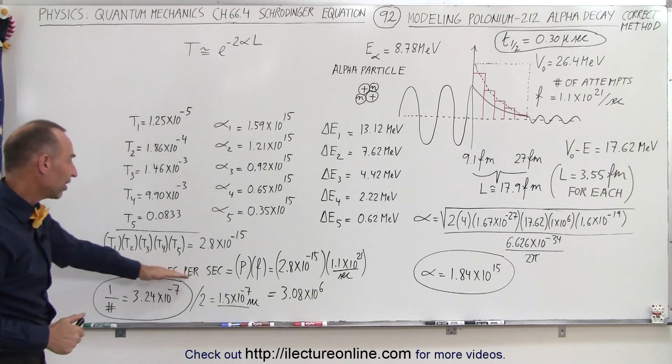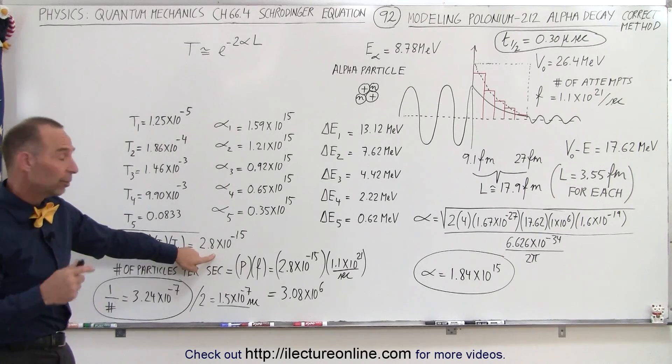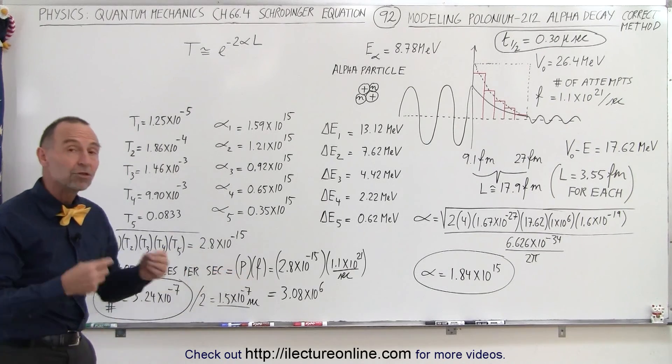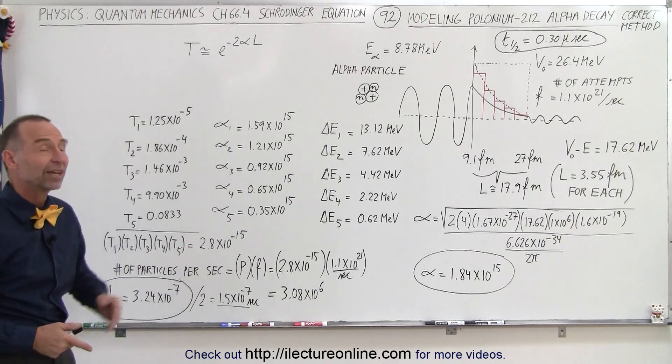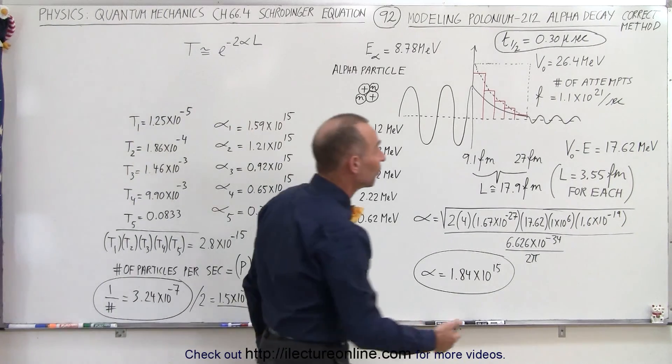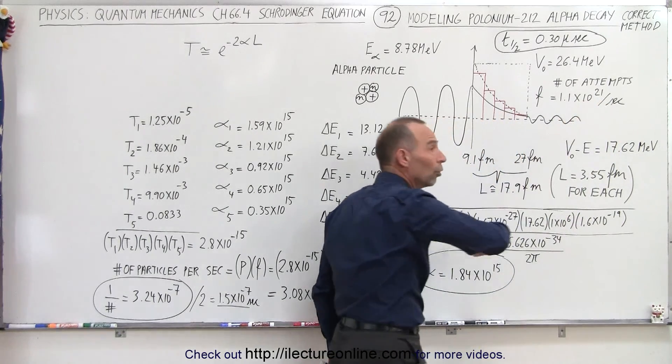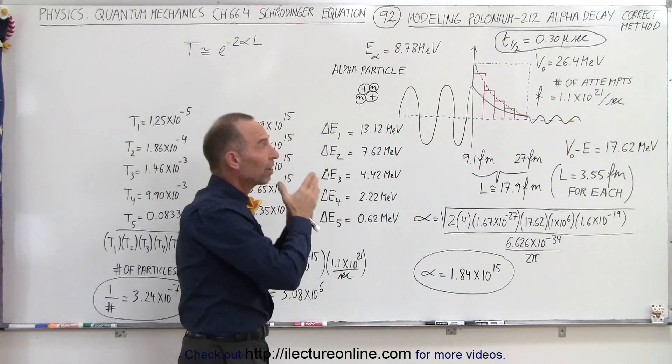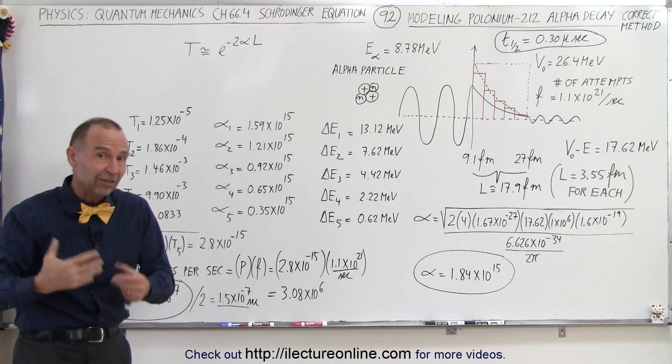The number of particles per second that would then break through would be the probability of a single particle breaking through times the number of attempts, the frequency of the attempts. And we already saw in the previous video that it's 1.1 times 10 to the 21 particles, or times that the alpha particle tries to break through the barrier. And eventually if the probability is not zero, it's going to succeed.